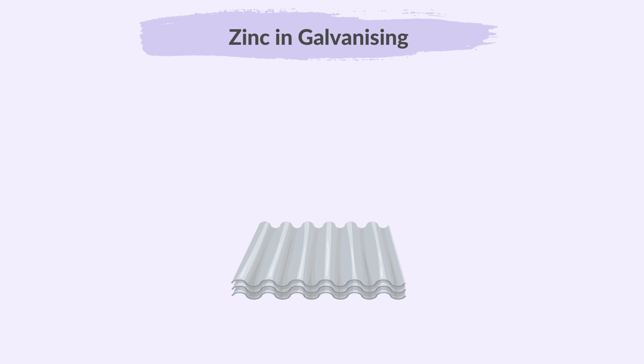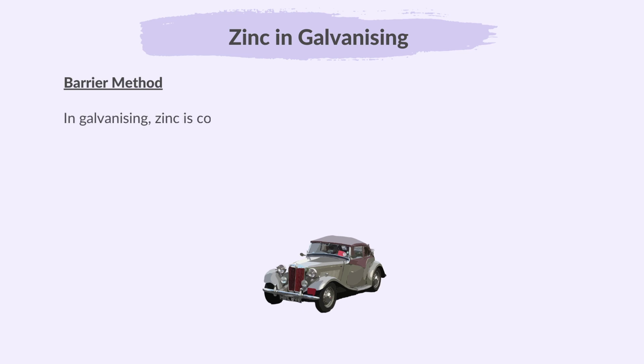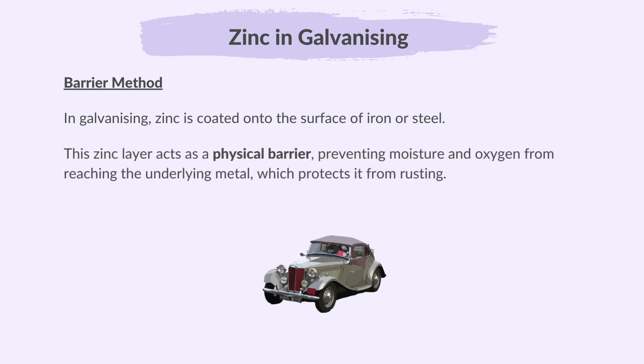Zinc in galvanizing is another method to prevent rusting. Galvanizing is coating iron or steel with zinc to prevent rust. The zinc layer keeps moisture and air away and helps protect the metal from corrosion. It acts both as a barrier and provides sacrificial protection. In galvanizing, zinc is coated onto the surface of iron or steel by dipping the object into molten zinc. This zinc layer acts as a physical barrier preventing moisture and oxygen from reaching the underlying metal. But if the coating gets damaged, the zinc will still protect the iron by sacrificial protection.